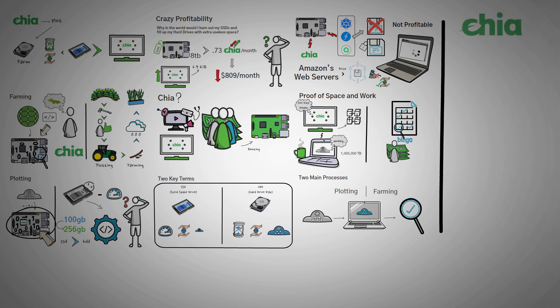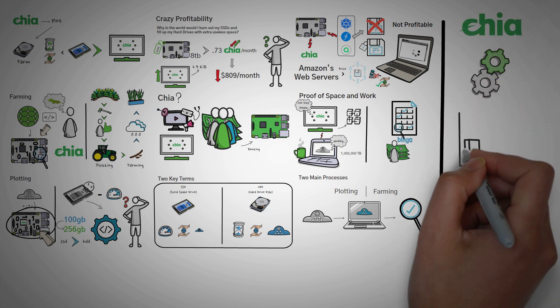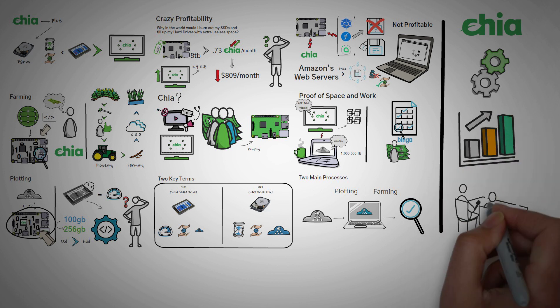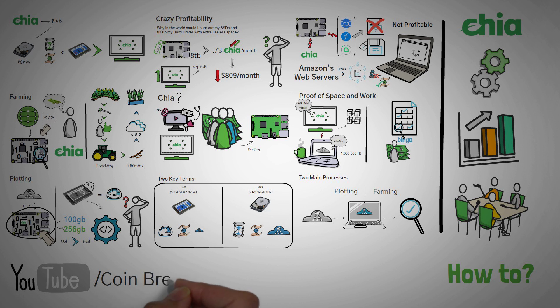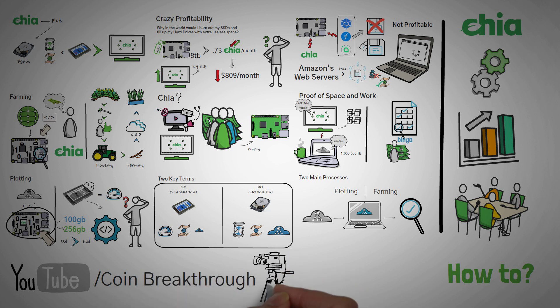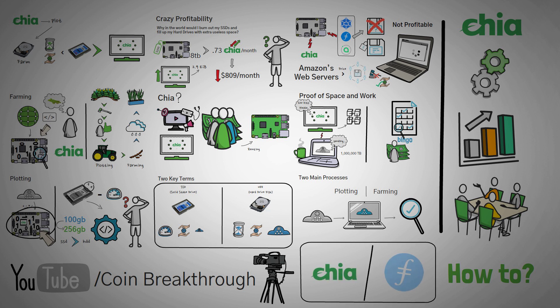If you'd like to learn more about specifically how the Chia cryptocurrency works, along with current profitability rates, mining pools, and how to set up a mega Chia rig, I highly suggest Coin Breakthrough, a channel created by my friend Caleb, who just posted a video we collaborated on that explains some differences between Chia and Filecoin. You can click the link in the description below or on this end screen to go to Caleb's friendly and super informative channel. Thanks so much for watching, and we hope to see you in the next video!